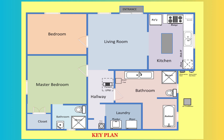This drawing depicts a key plan layout of a residential property. The key plan is a simplified, color-coded representation of the property layout. It highlights key areas of the house, including the kitchen, living room, bedroom, master bedroom, bathroom, hallway, laundry area, and closet. Rooms are labeled for clarity and general positioning is shown without detailed dimensions. Features such as appliances, sinks, bathtubs, and doors are illustrated for reference.